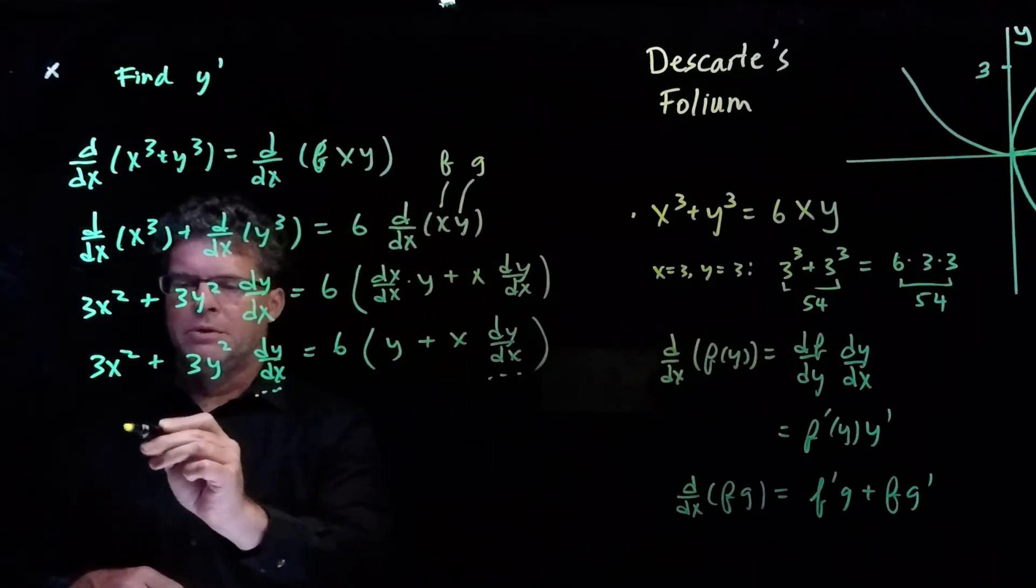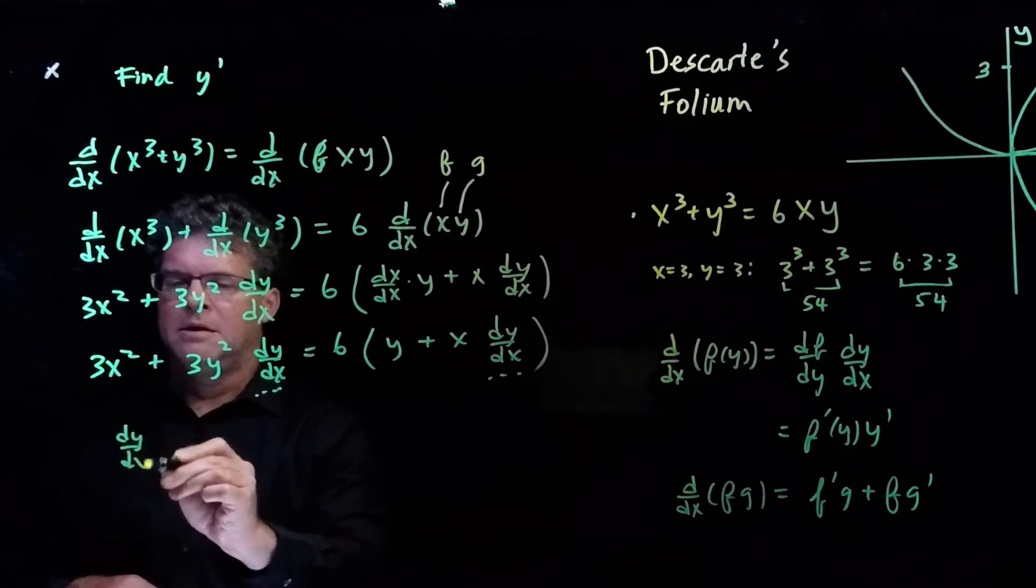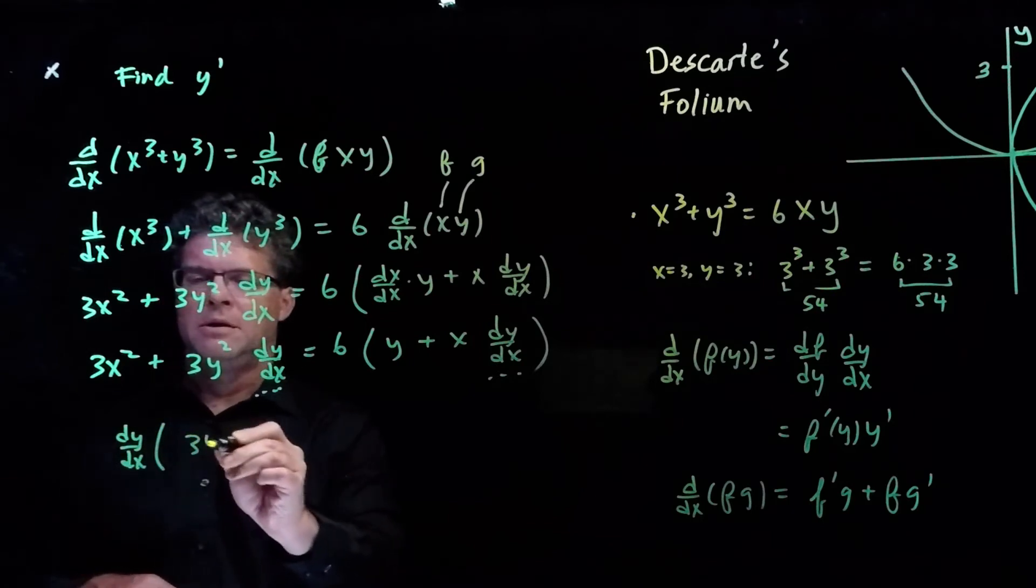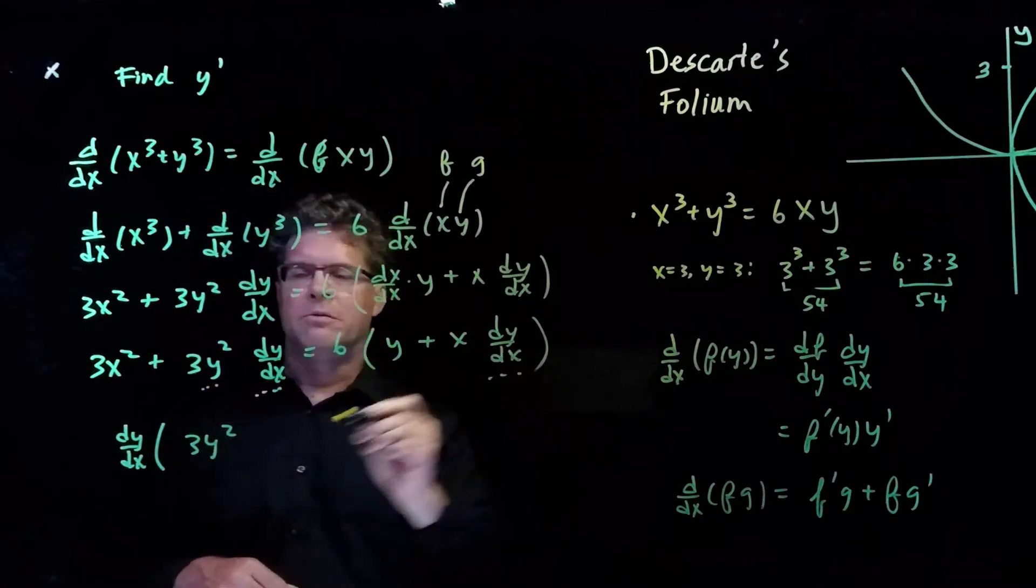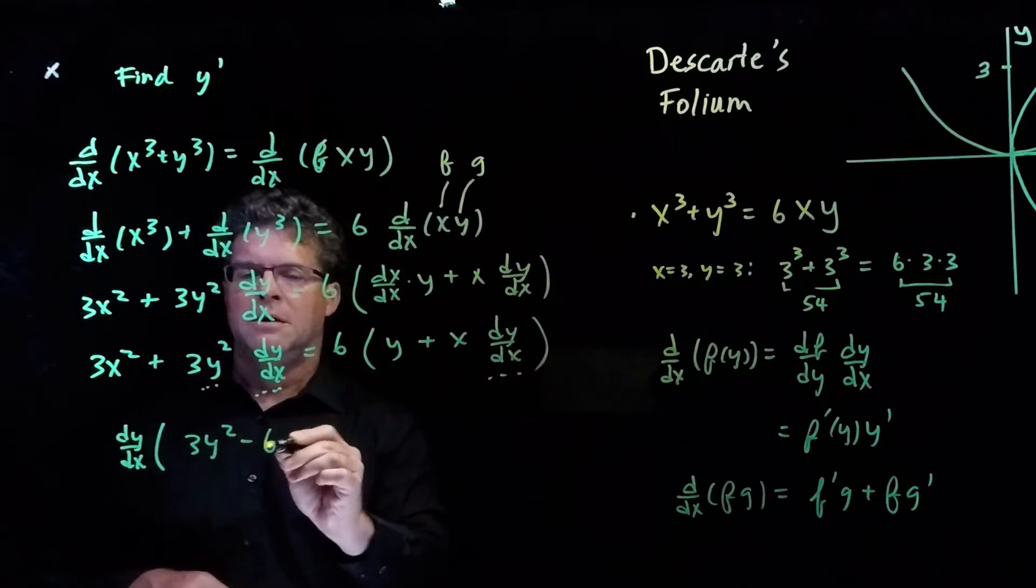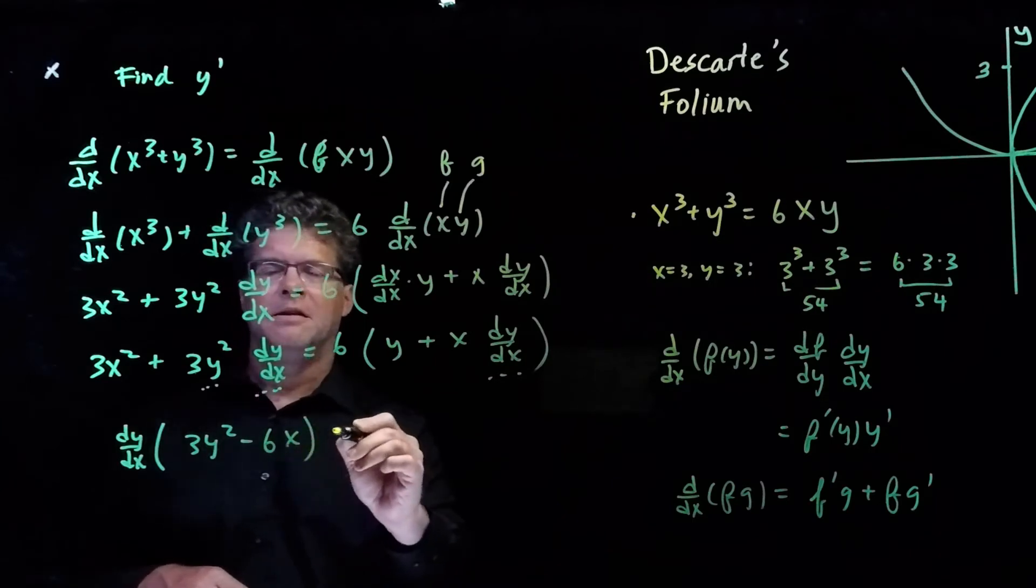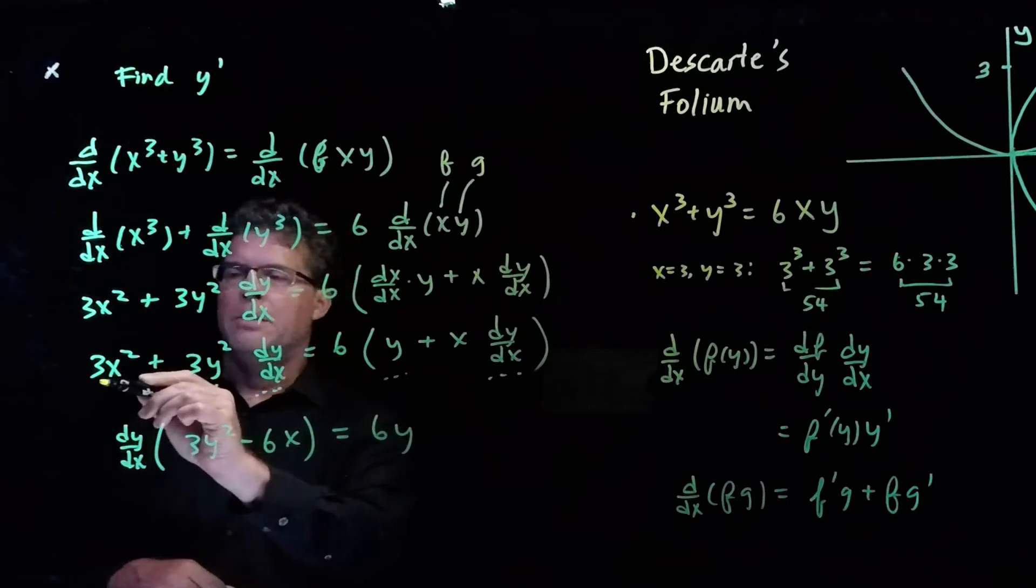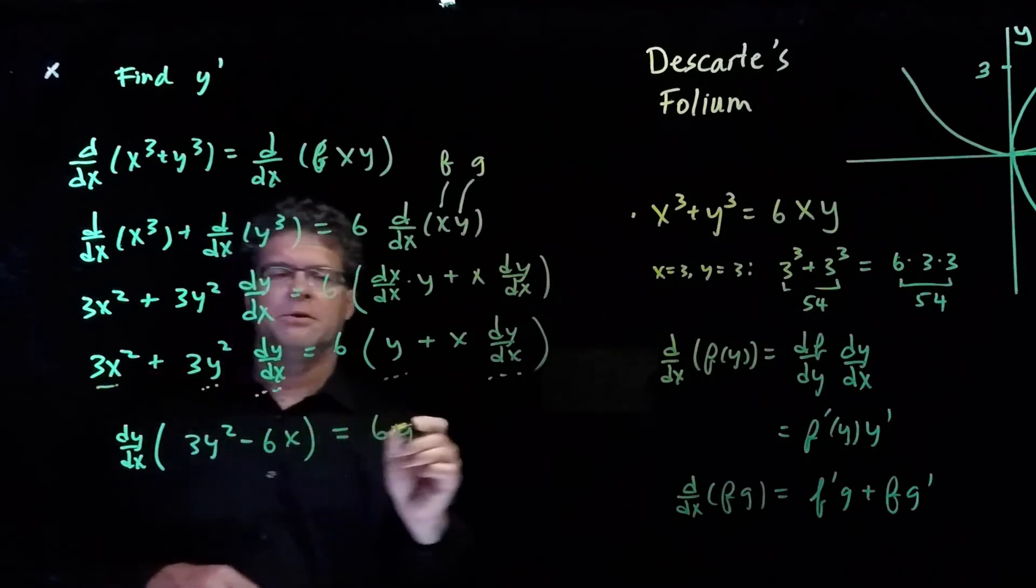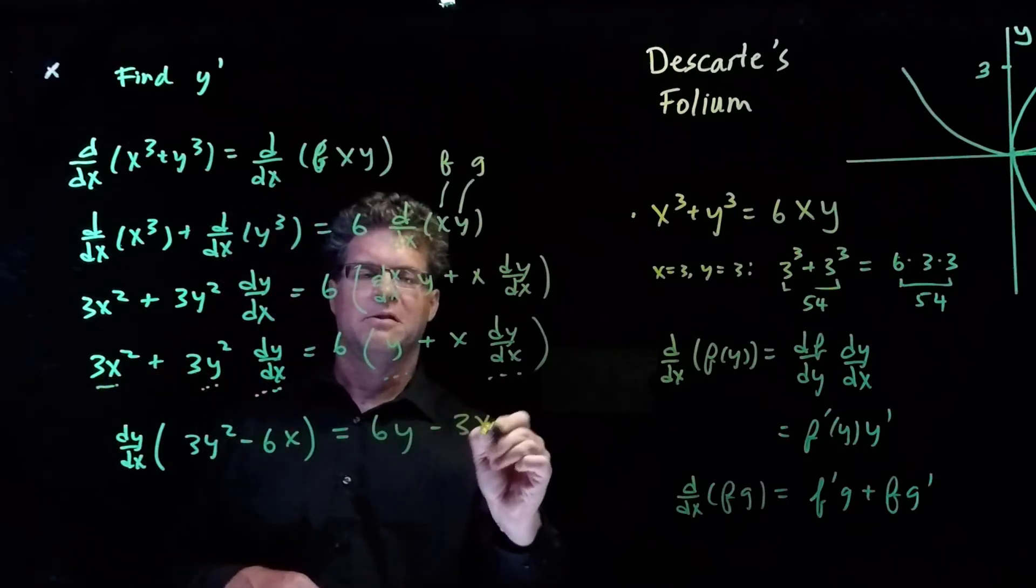And so we write dy/dx times 3y squared. We've got this term. And then we need to bring this term over, which is minus 6x is equal to 6y. We've got this term. We have to bring this term here over to the right-hand side, which is minus 3x squared.